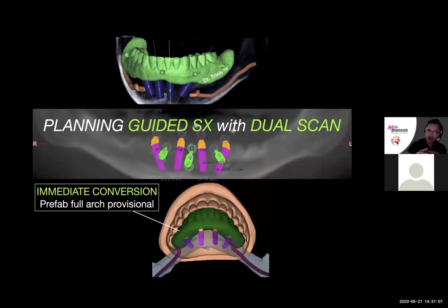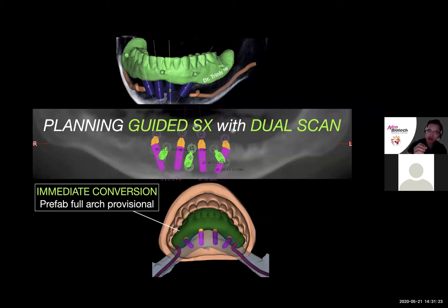The technical term for this technique is called the dual scan technique. When you have the combined scan, you make measurements for the amount of restorative space and amount of bone reductions the same way I showed you with the dentate patients, and you do your implant planning on this combined scan. For those who want to do guided surgery, the dual scan technique allows you to plan implant position, the surgical guide, as well as the prefabricated temporary provisional for immediate conversion.